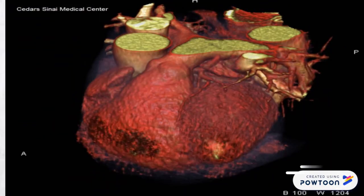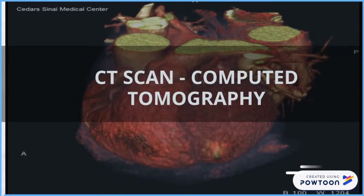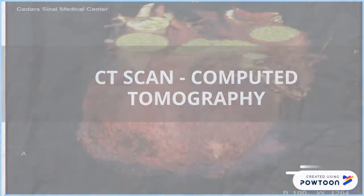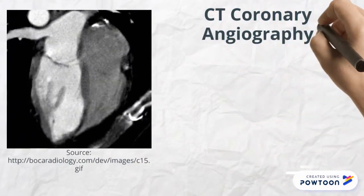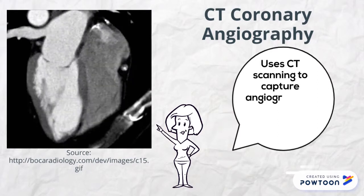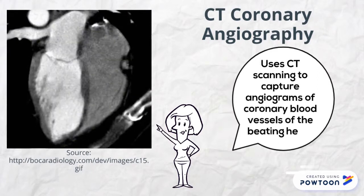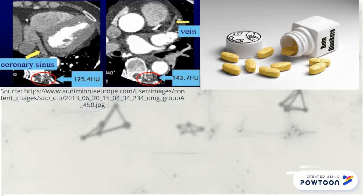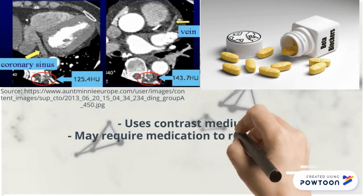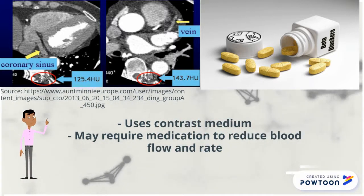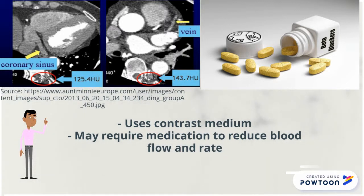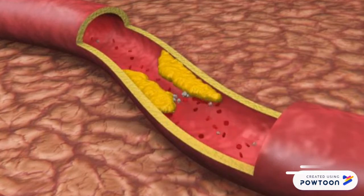Now we will be talking about CT scans, also called computed tomography. This can be used for imaging the heart through CT coronary angiography. CTCA uses CT scanning technology to capture angiograms of the coronary blood vessels of the beating heart. CTCA uses contrast medium injected into the veins, usually in the arm, to increase the density of the blood in the vessels and allow the structure of the vessels to be imaged clearly. Sometimes, medication to reduce blood flow and heart rate is also administered to further improve clarity of images. CT coronary angiography is very effective in diagnosing and monitoring narrowing of arteries and blockages.